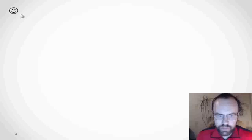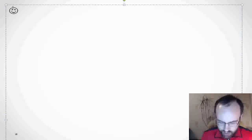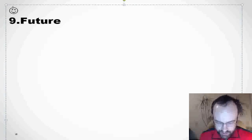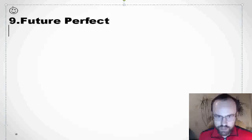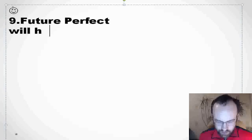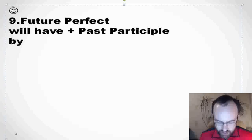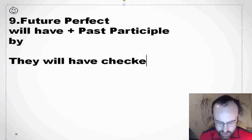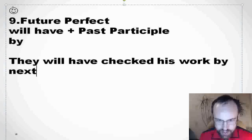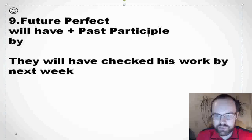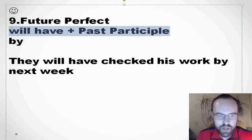Let's talk about future perfect. We use it when talking about the future. The formation is will have plus past participle. We use it when we have 'by.' For example: they will have checked his work by next week. Will have plus past participle when you have 'by.'